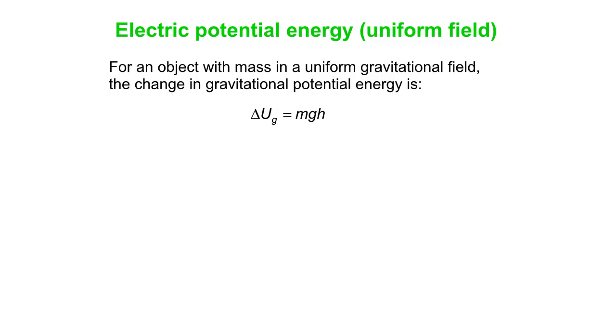So we know this, that when an object with mass moves up or down, there's a change in gravitational potential energy. Our symbol for potential energy is U. And we have a change in that, which is MGH.